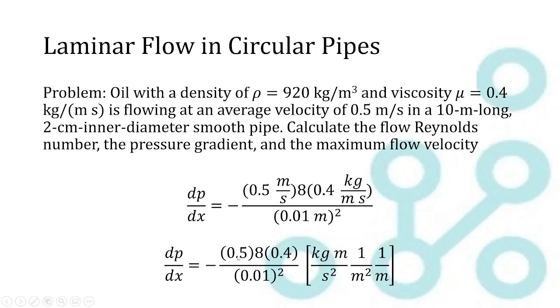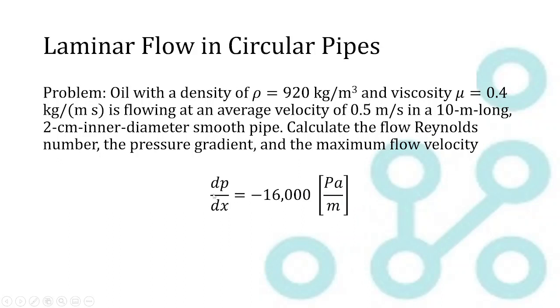The rest of this is pretty straightforward. We're just going to calculate these out. And we end up with a change in pressure over change in length of negative 16,000 pascals per meter. So that is our pressure gradient. If we were looking for the absolute change in pressure, we would multiply this out by the length of the tube. But since it's asking for the pressure gradient, this is our final answer for the second part of this problem.